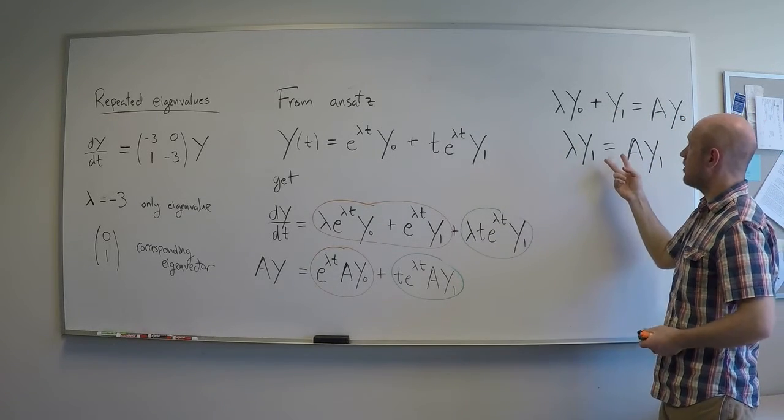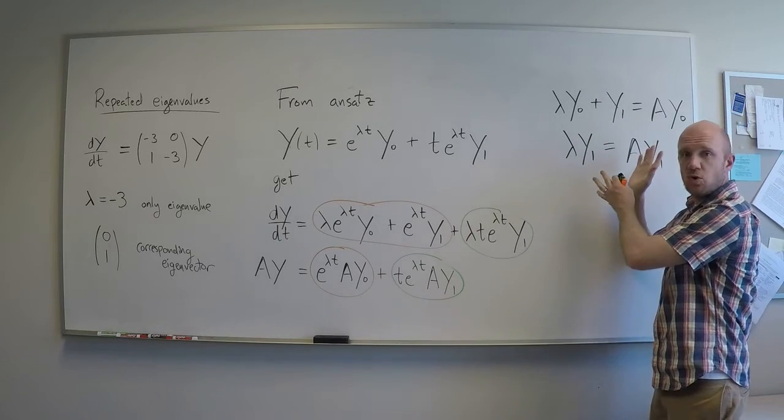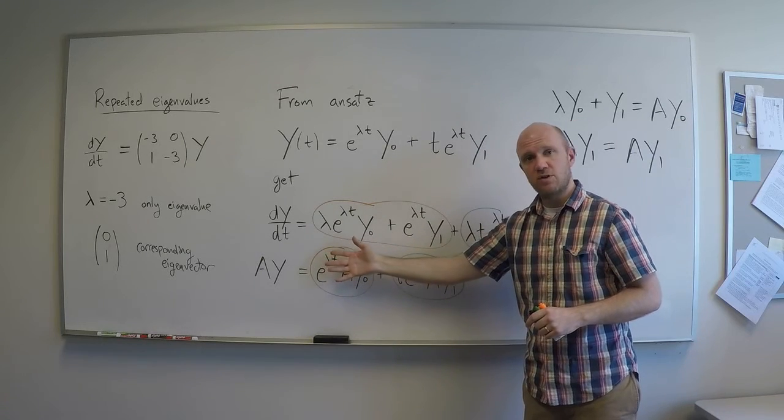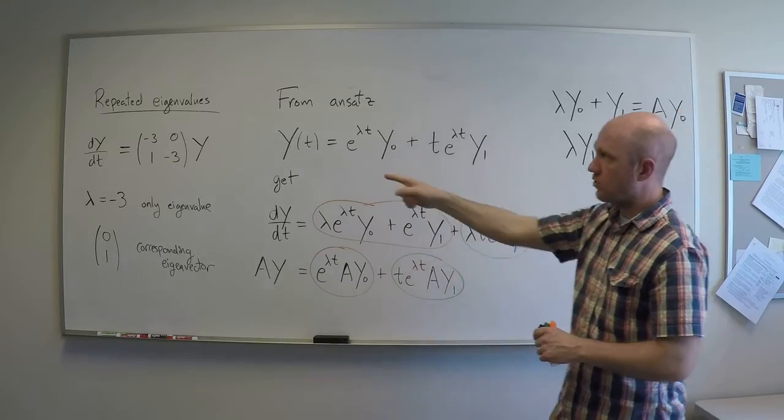So these two equations involving only lambda, A, y0, and y1, those two equations are the consequence of the ansatz when I plug it into the differential equation. Let's see how this can lead us to a solution to the original example.